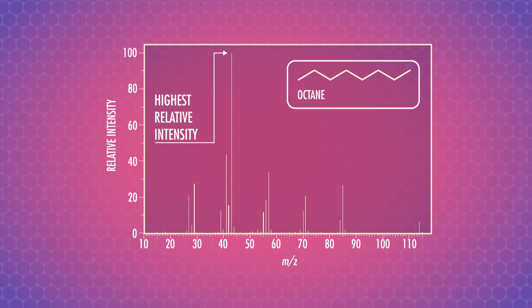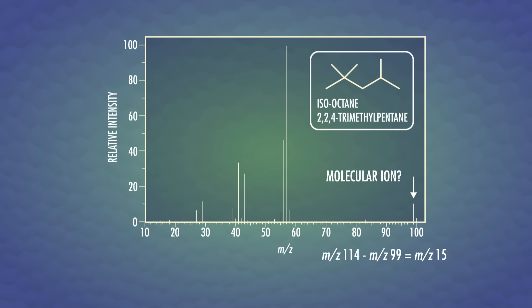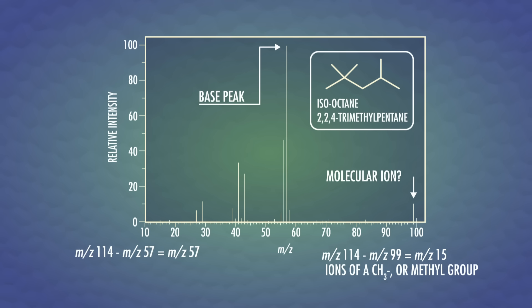Switching over to the spectrum for isooctane, we can see the pattern is very different. We know its molecular mass is also 114 mass units, so we can see that the molecular ion isn't there. The highest recorded mass is that small blip at 99 m/z, and 114 minus 99 is 15 mass units, which corresponds to the loss of a CH3, or methyl group. The base peak is 57 m/z, and using the same math, we can figure out that this is a 4-carbon group with 9 hydrogens. The branching of isooctane leads to a very different base peak from octane.